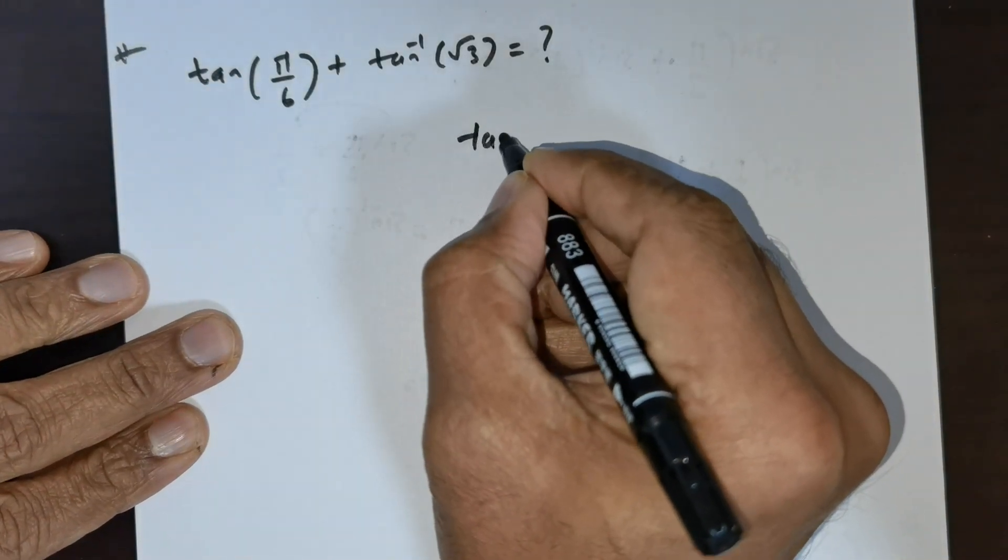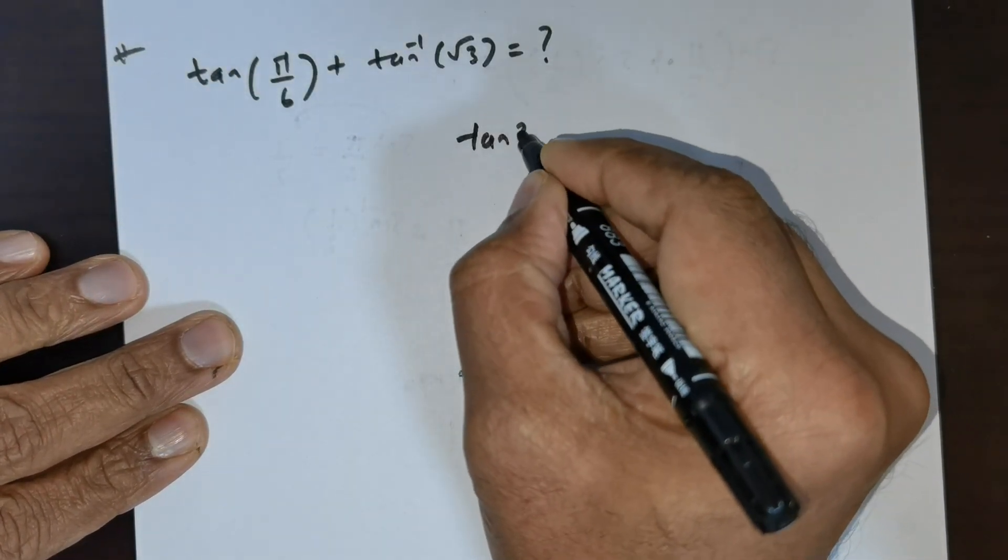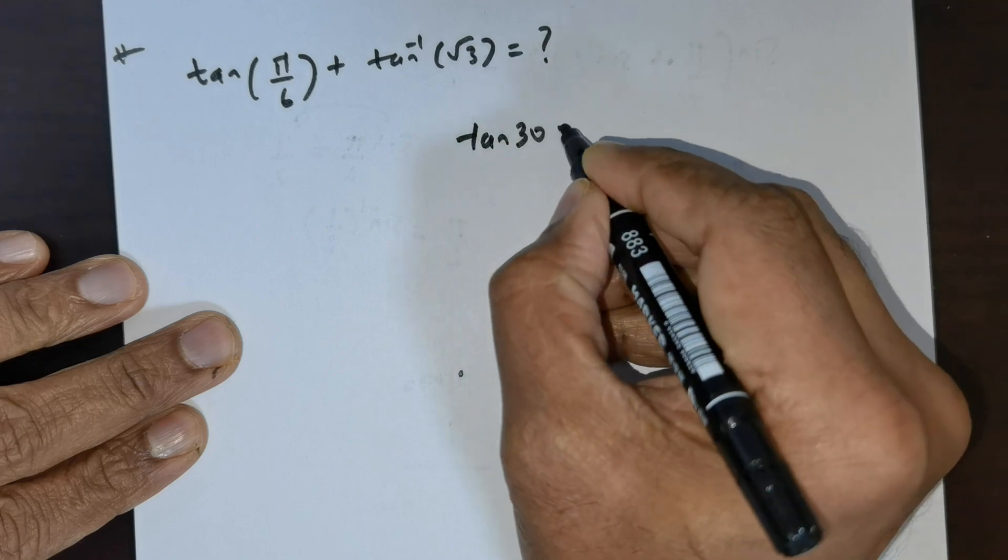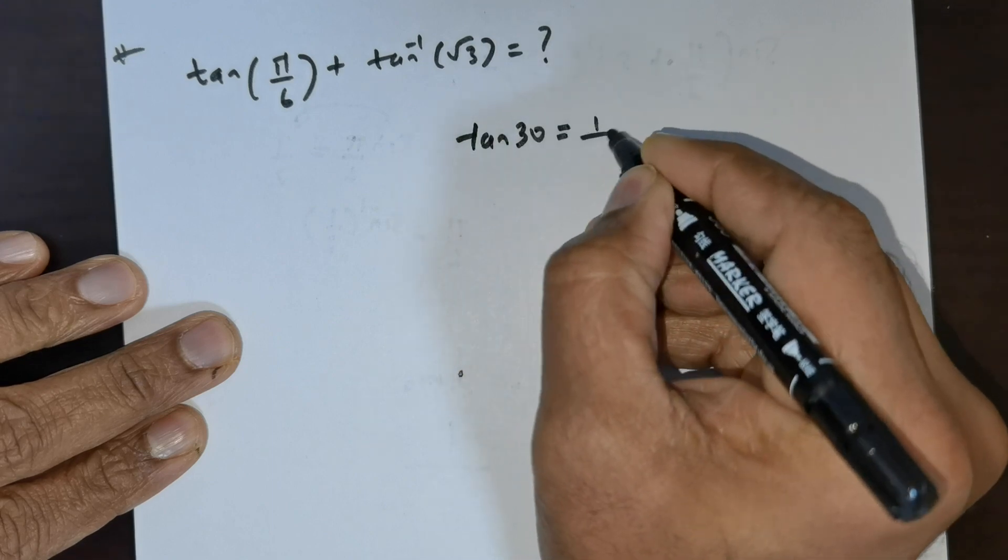Now tan inverse of root 3. Suppose you have tan 30. Tan 30 is going to be 1 over root 3.